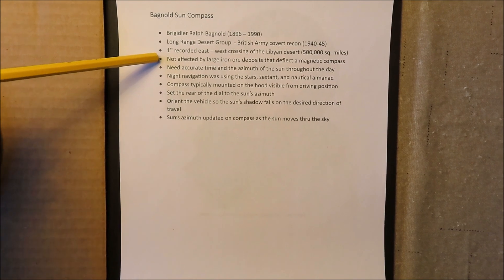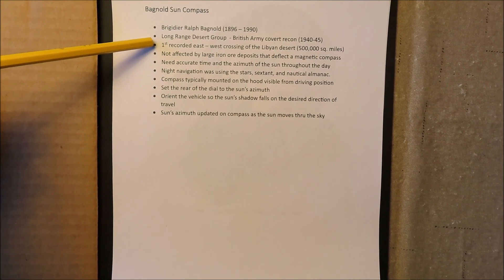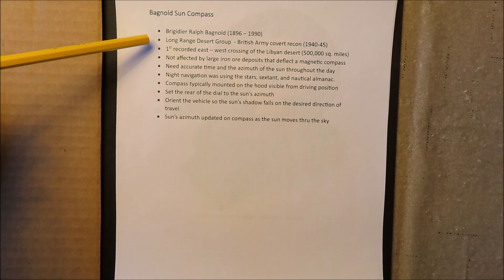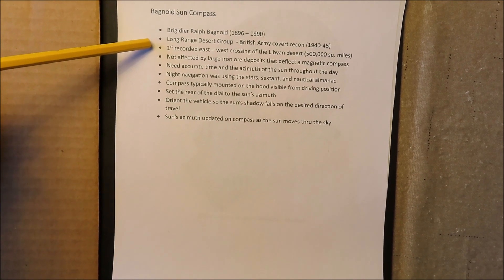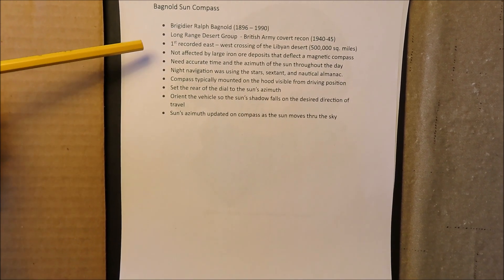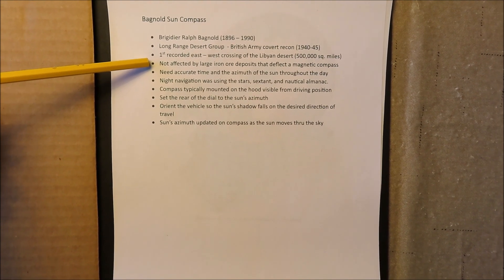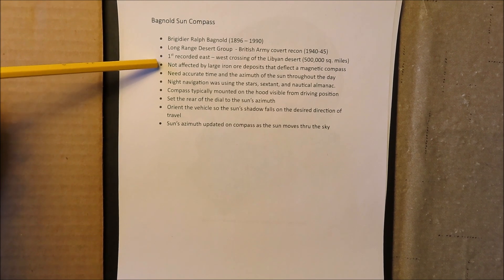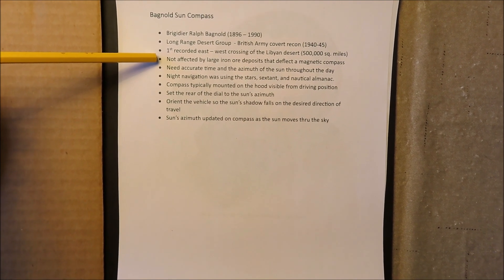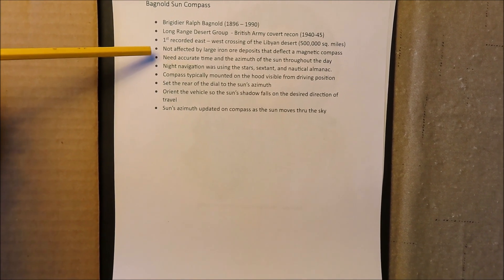Now, one of the problems they ran into was that the desert had large iron ore deposits. Well, iron ore deposits will deflect a magnetic compass, making it useless. So they needed to come up with something better than that. So they came up with this sun compass.